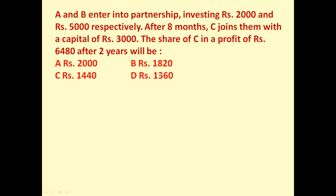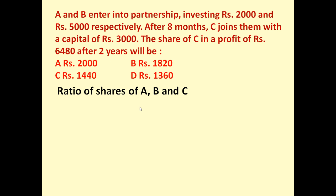So the total profit they earn is 6480 rupees. After 2 years, what should be the share of C in that profit? To determine this, first let us find out the ratio of their investment.